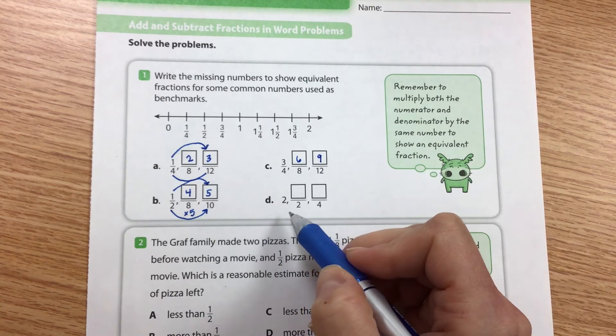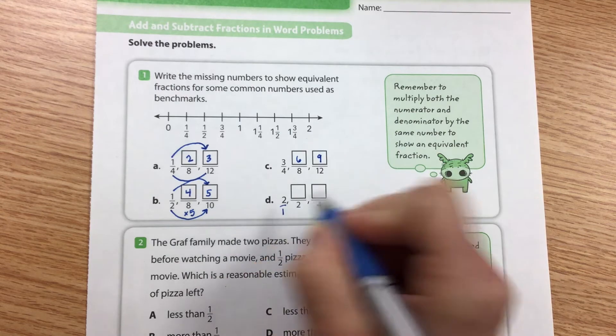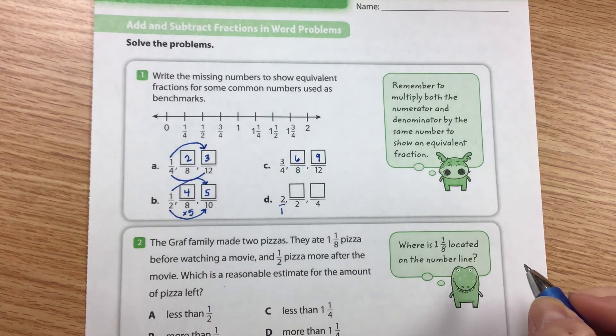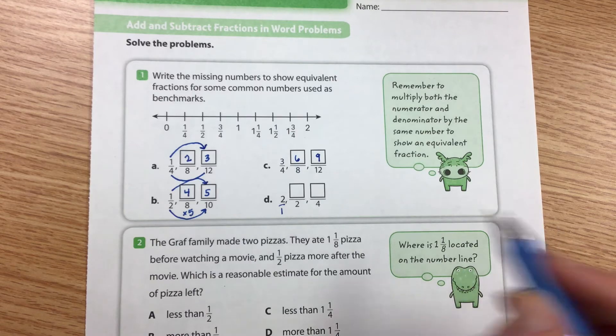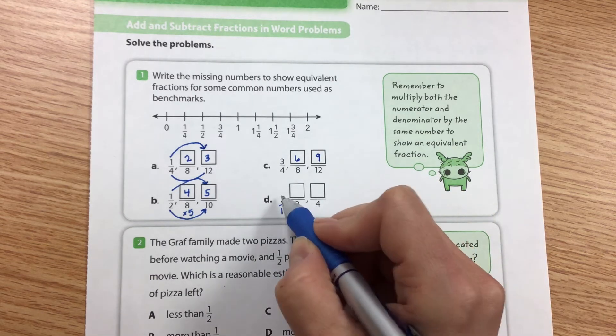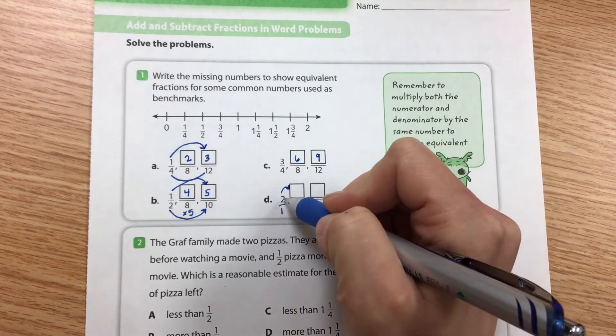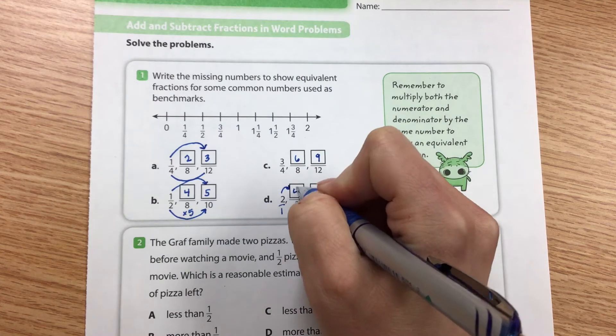All right, so now this one's our fun one I think. Two is the same thing as two over one. Remember any number that's a whole number can be turned into a fraction if we stick it over one. So to turn one into two would be multiplying it by two, so do the same thing to our numerator. Multiply it by two we would get four.